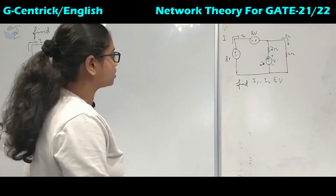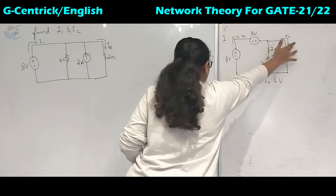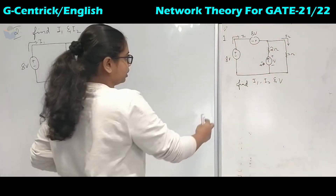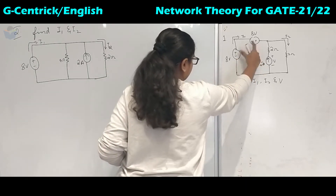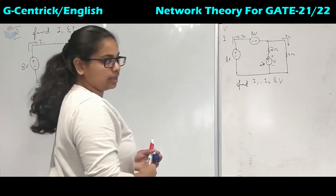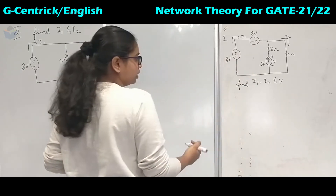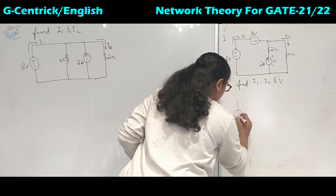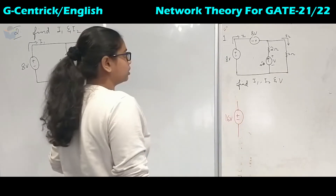They have asked us to find I1, I2 and V. Here is I1, here is I2 and here is V. In the circuit there are two voltage sources connected in series. The polarities are the same: plus minus, plus minus. So we can add them up — it will become 8 plus 8 equals 16 volts.